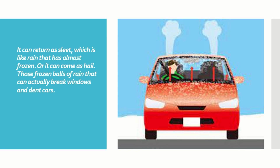It can return as sleet, which is like rain that has almost frozen, or it can come as hail — those frozen balls of rain that can actually break windows and dent cars.